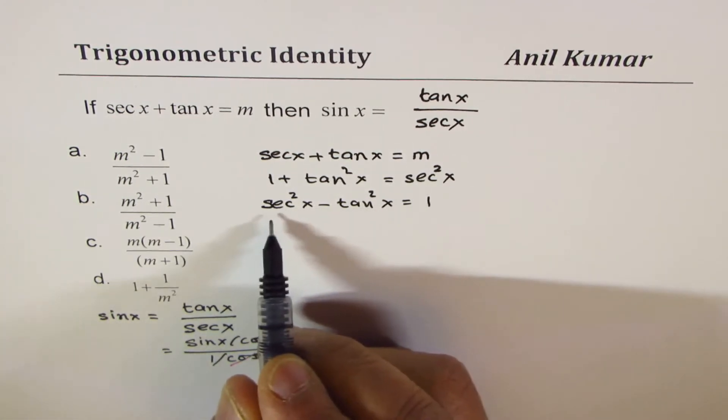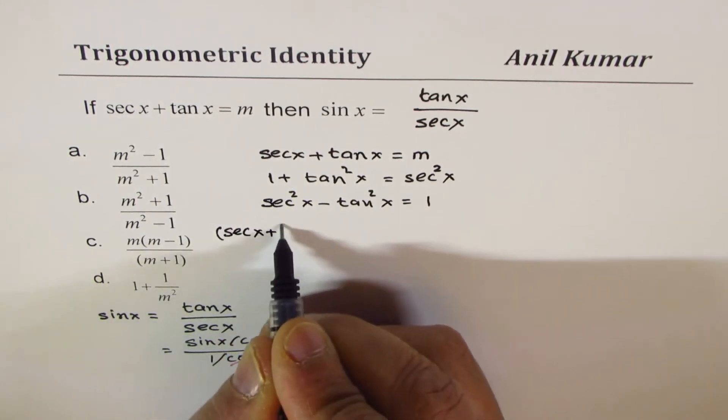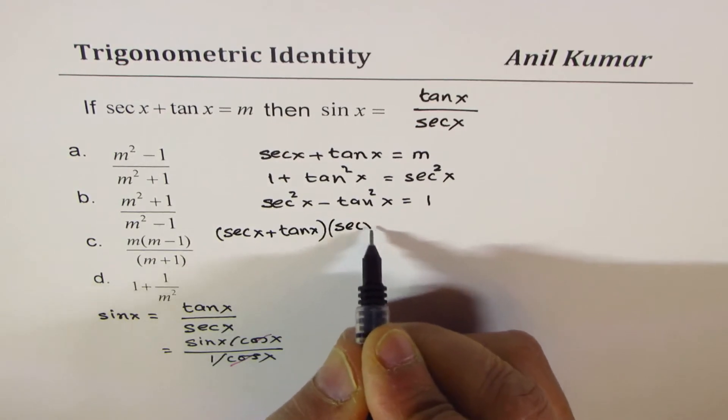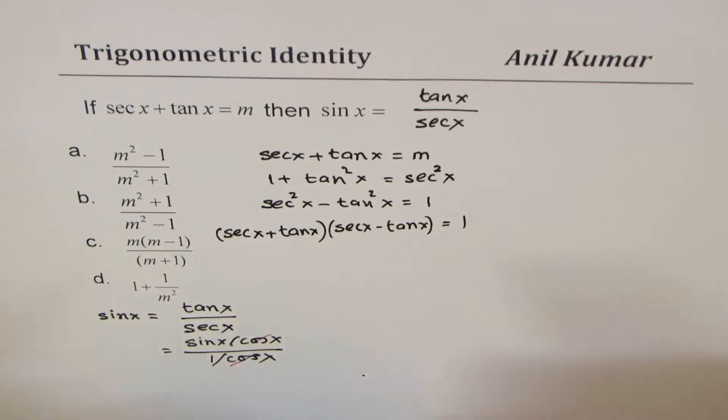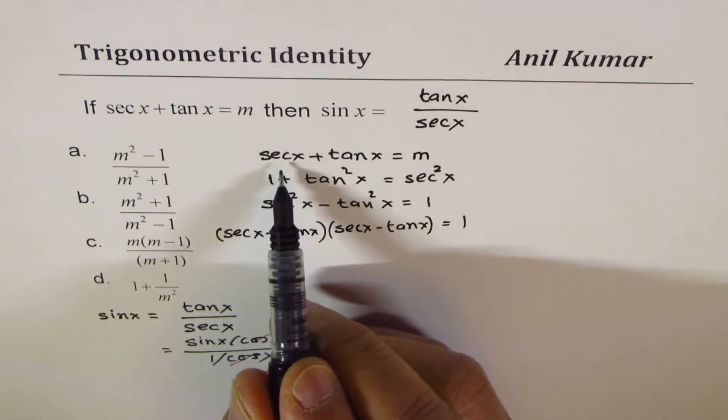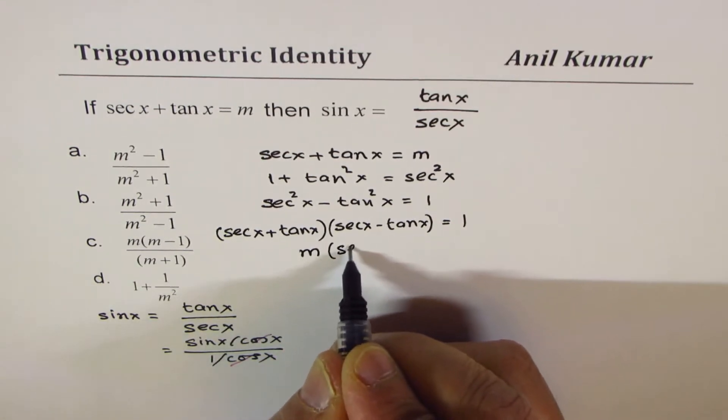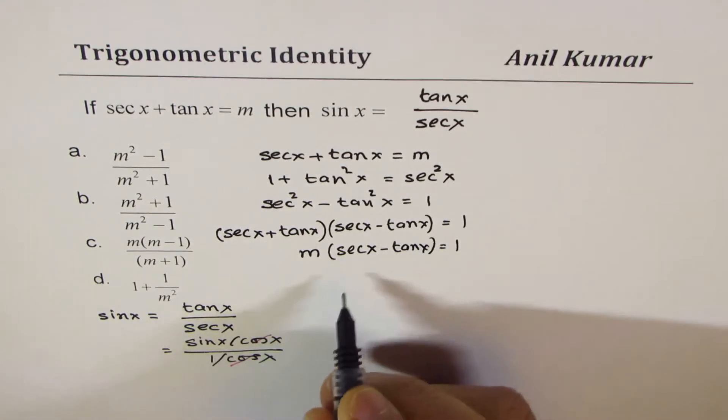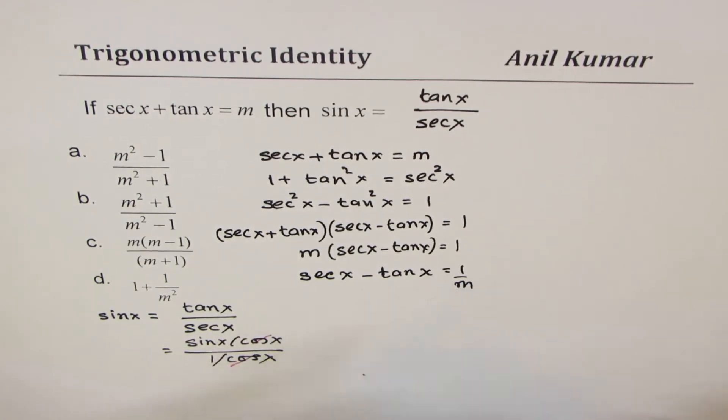And this is difference of squares. I could always factor this as secant x plus tan x times secant x minus tan x, that should be equal to 1. Now, since we are given that sum of secant and tan is m, I'll replace this with m and then we have secant x minus tan x equals to 1. Or, I get an equation here which says secant x minus tan x is 1 over m, correct?